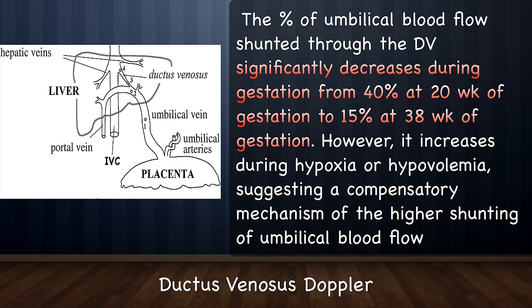The percentage of umbilical blood flow shunted through the ductus venosus significantly decreases during gestation — from 40 percent at 20 weeks of gestation to 15 percent at 38 weeks. However, in the presence of hypoxia or hypovolemia it increases instead of decreasing, suggesting a compensatory mechanism of higher shunting of umbilical blood flow.